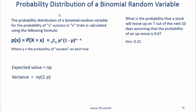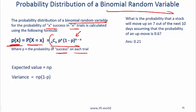We are still on discrete distributions and here we'll talk about the binomial random variable. This probability is the probability distribution of a binomial random variable for the probability of X successes in N trials, and it is calculated using this formula. P is the probability of success on each trial.